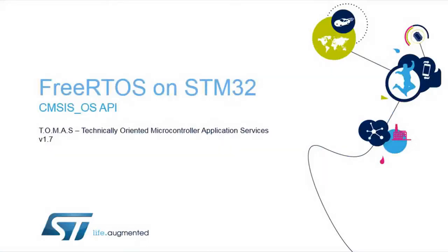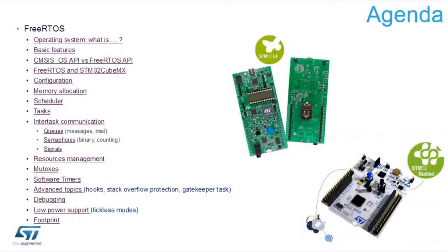Let's begin with what FreeRTOS is about. We will discuss what FreeRTOS is as an operating system, describe its basic features, the two APIs you can use to access its functions, linkage with STM32CubeMX, a couple of examples, and some live demonstration. We will speak about the setup of FreeRTOS — how you can add or exclude features to save memory space.